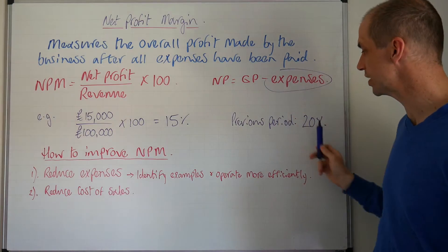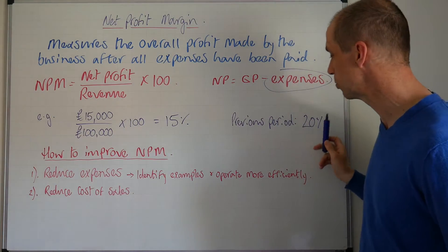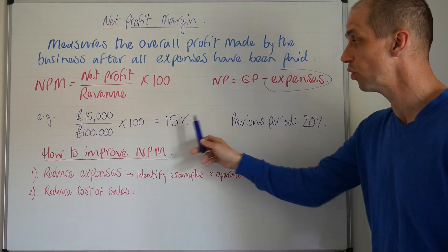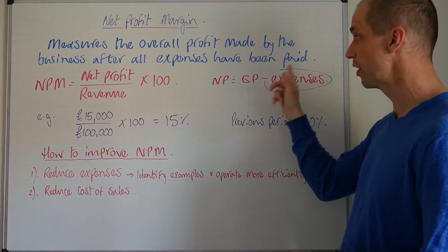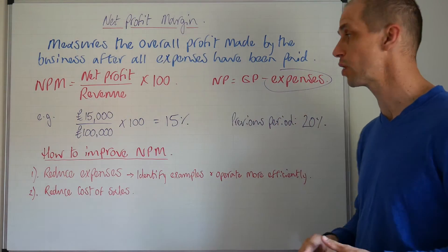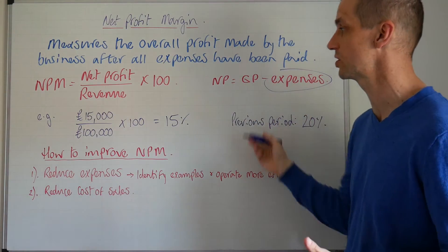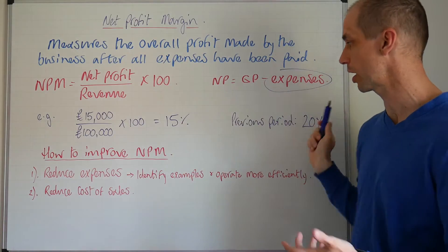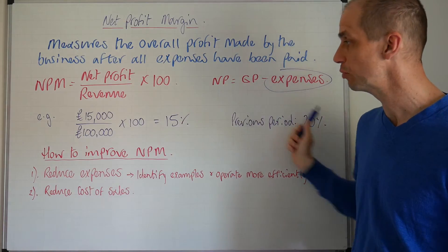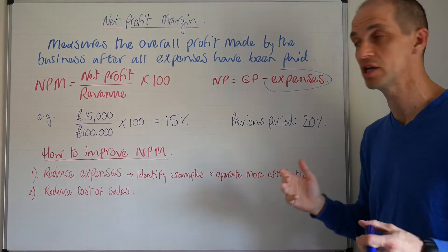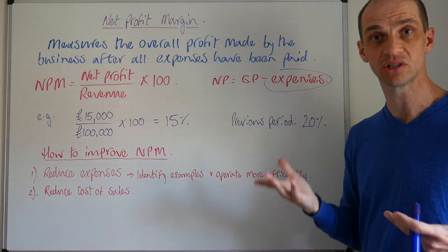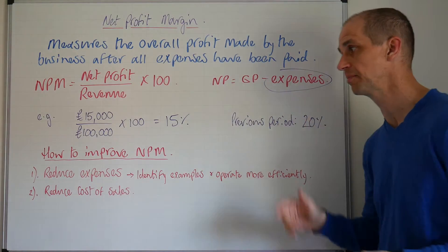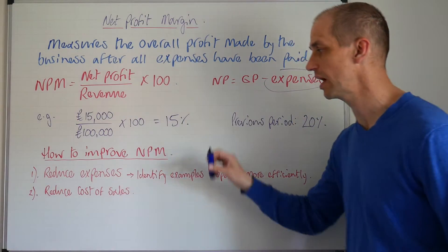This shows us that what's likely to have taken place is a rise in expenses, if the gross profit has remained relatively consistent at perhaps forty or fifty percent in each period. If we've ended up with two very different ratios, that tells us expenses are likely to have risen.